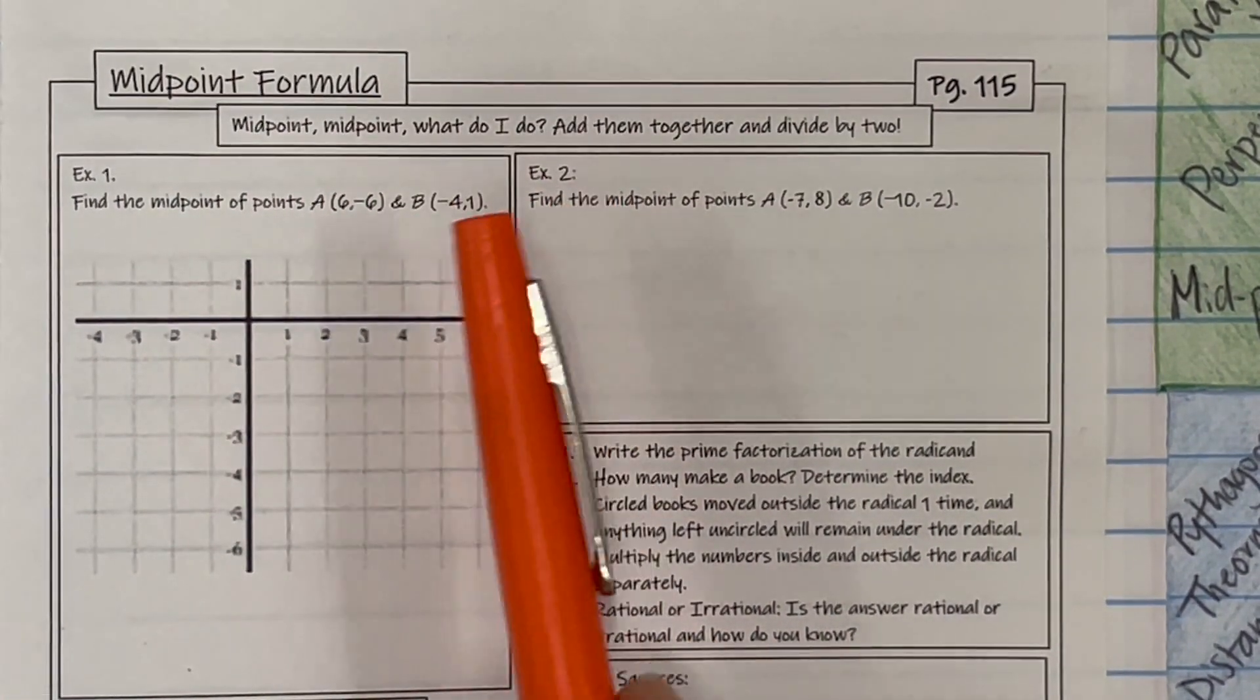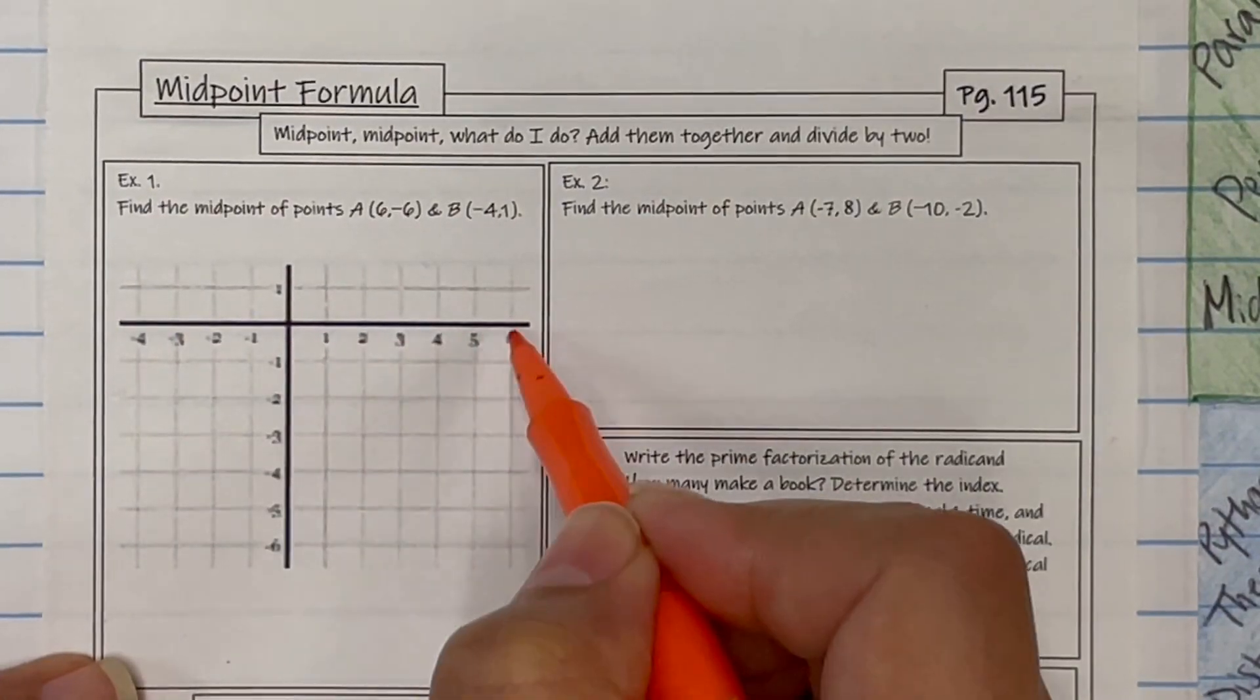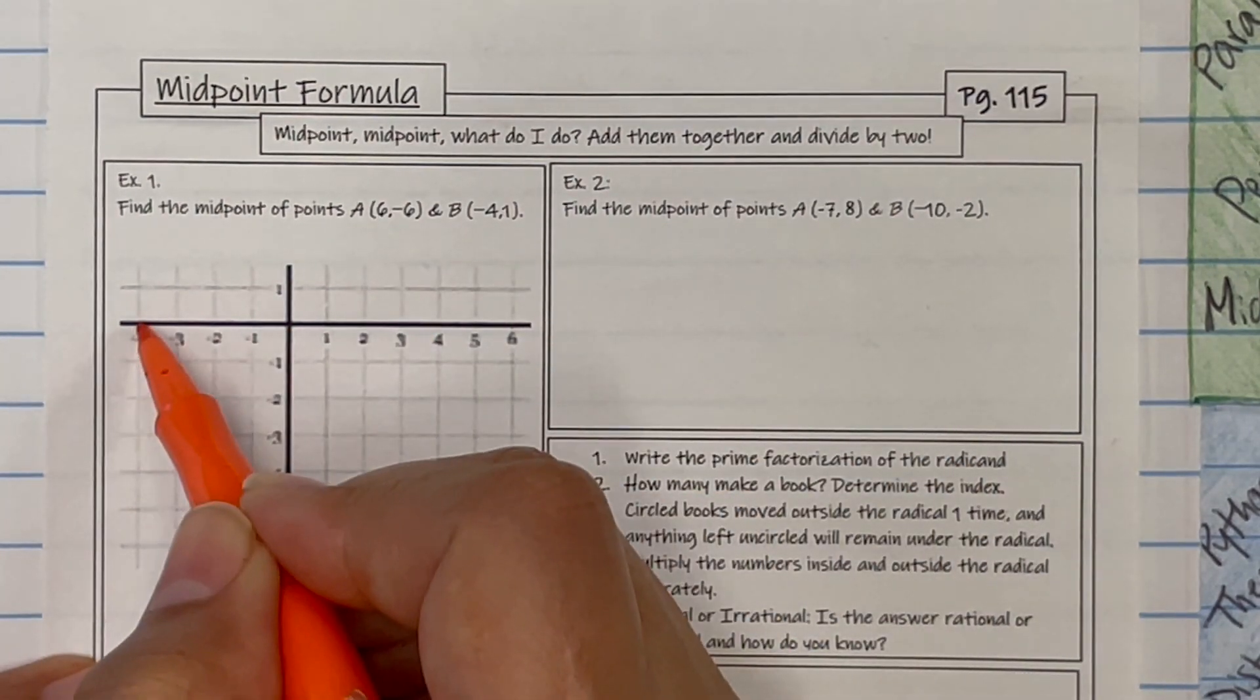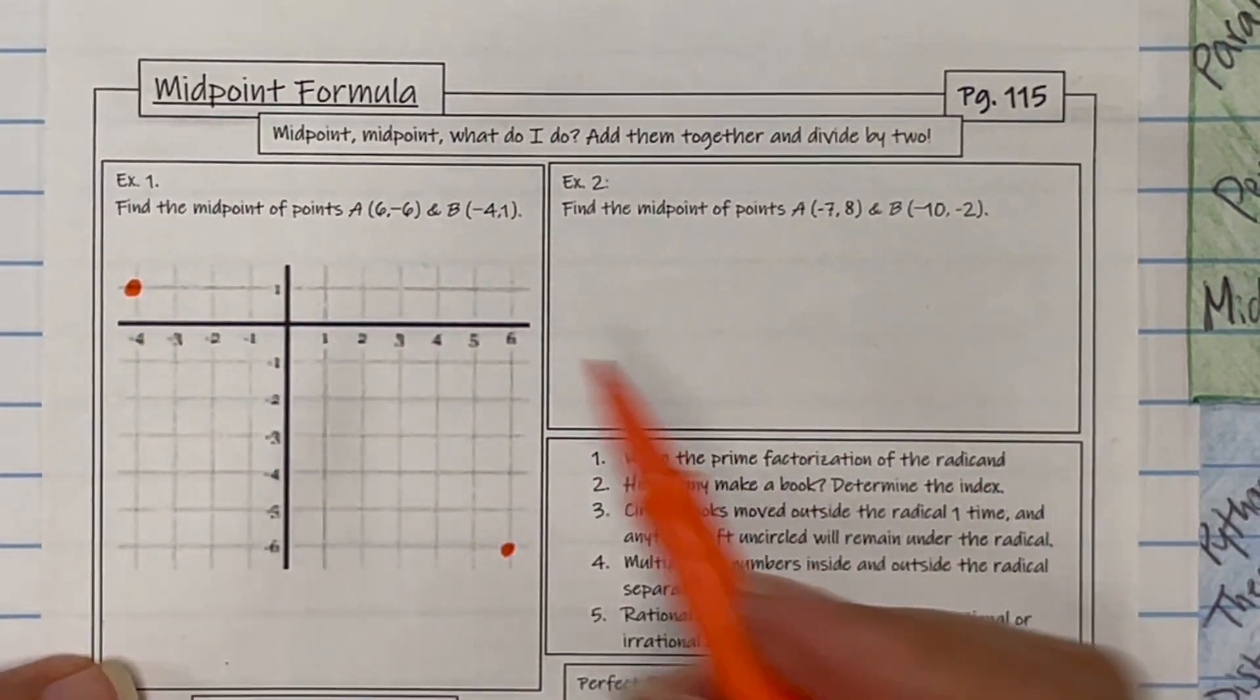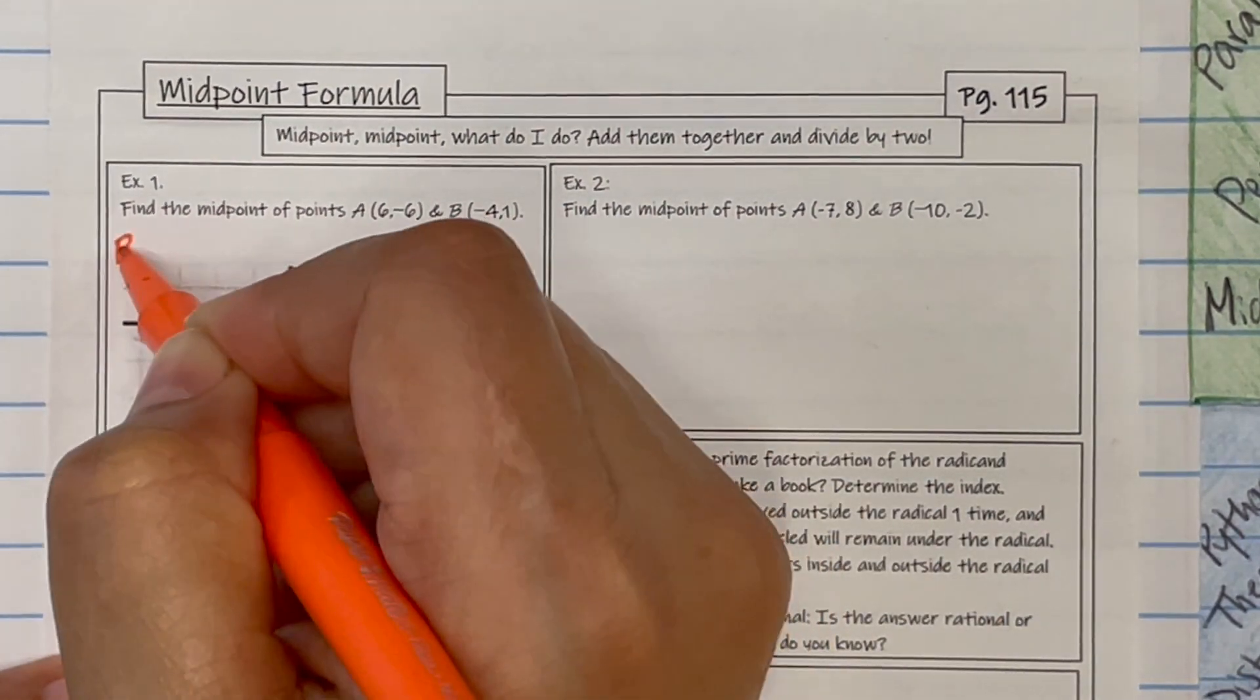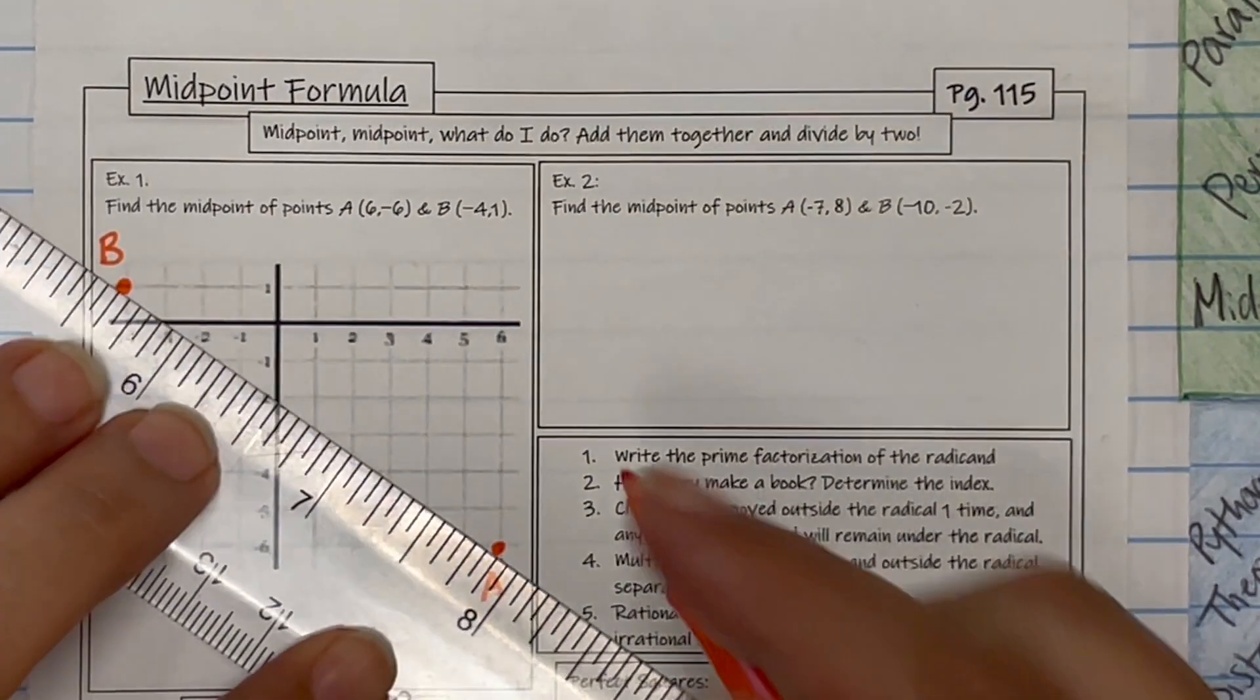Add them together and divide by two. So let's go ahead and plot the points: 6, negative 6, and negative 4, 1. So the question is, find the midpoint of those two points. This is A, and this is B. Find the middle of those two points. So what do you do?